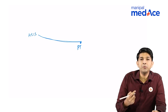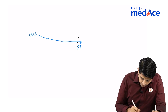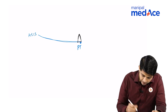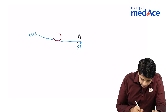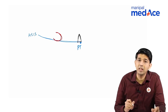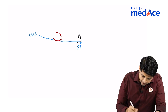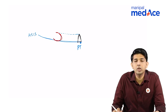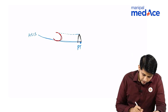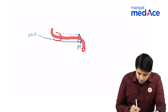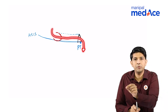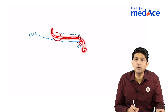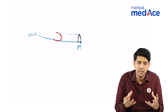The superficial inguinal ring is a triangular opening in the external oblique muscle. The deep ring is a U-shaped, horizontally placed opening in the fascia transversalis, and the roof is formed by the arched fibers of the conjoint tendon. If the hernia is coming out through the inguinal canal, it goes from the deep ring through the canal, through the superficial inguinal ring, and then over and medial to the pubic tubercle. So this is how an inguinal hernia occurs.